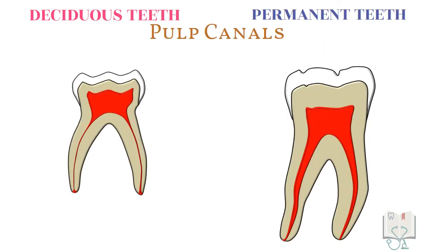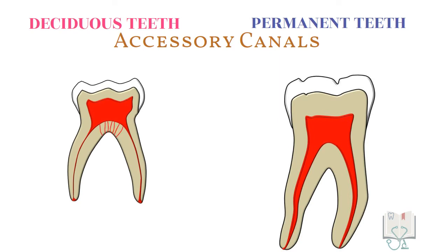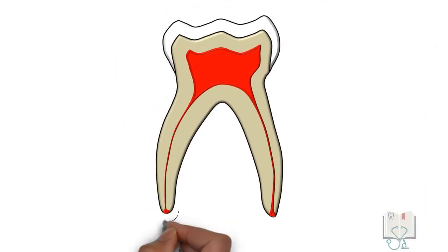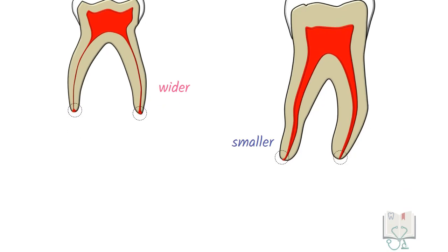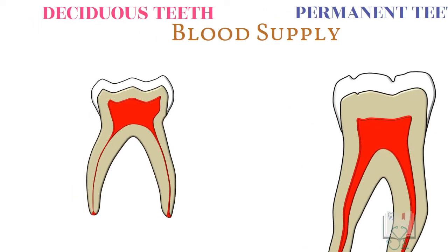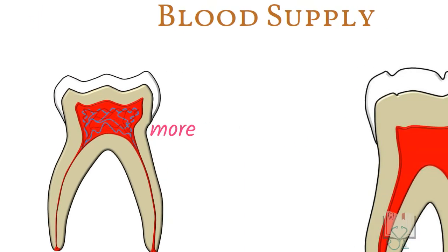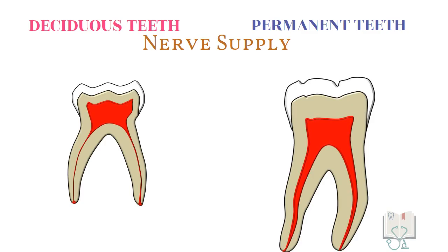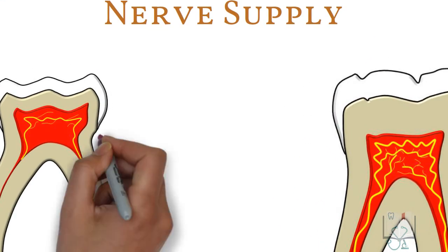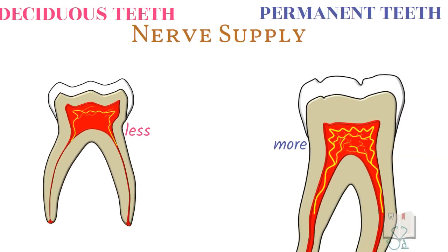In deciduous teeth, the root canals are ribbon-like and narrow as compared to the well-defined broad canals in permanent teeth. In deciduous teeth, the pulp chamber floor has numerous accessory canals whereas they are minimal in permanent teeth. In deciduous teeth, the apical foramina are wide whereas in permanent teeth they are constricted and small. The blood supply of pulp in deciduous teeth is abundant in comparison to permanent teeth in which it is reduced. However, in nerve supply, the pulp of deciduous teeth is less densely innervated as compared to that in permanent teeth.